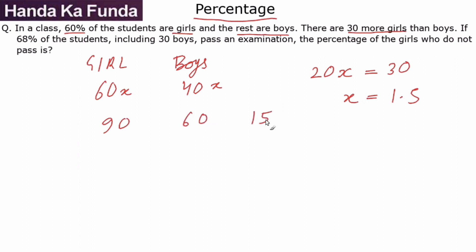If 68% of these students pass, which means 68% of 150 have passed. If it was 100, then 68 students would have passed. It is 150, so 68 plus half of 68, or 68 plus 34, or a total of 102 students have passed.